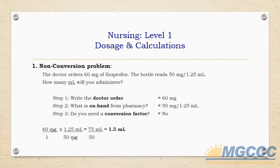I will review six different types of dosage and calculation problems, beginning with number one, which is considered a non-conversion problem. I will read the problem, go over the three steps it takes to solve the problem, and then do the calculations.